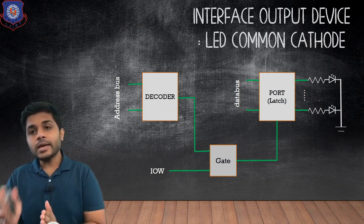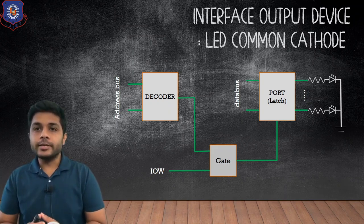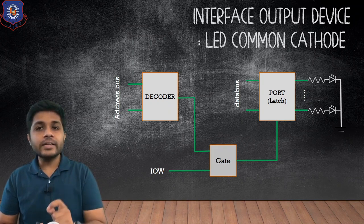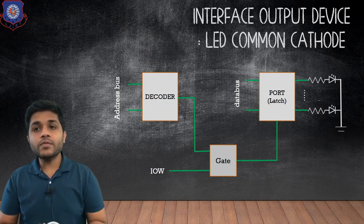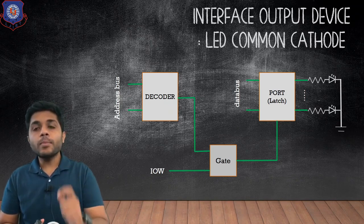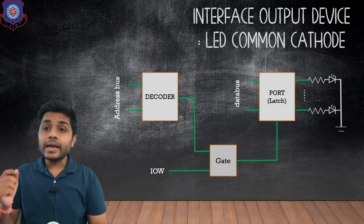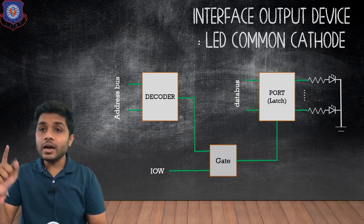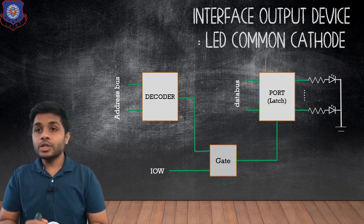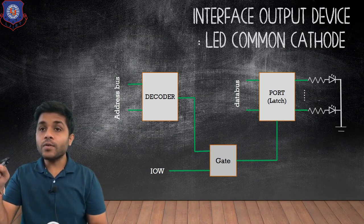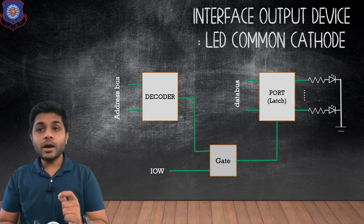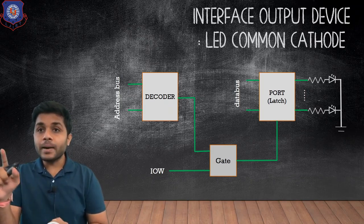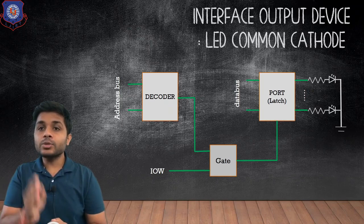Now let's see one example to interface an output device. You can see that in the figure, on the other side of the port we have connected LEDs, and the LEDs are connected in the common cathode configuration. Common cathode configuration means the cathode part of the LEDs are connected together — the cathode part of each LED is connected to ground.